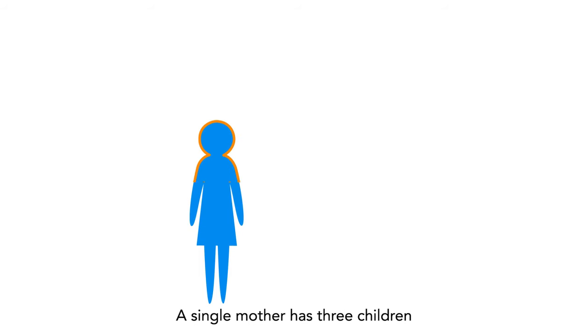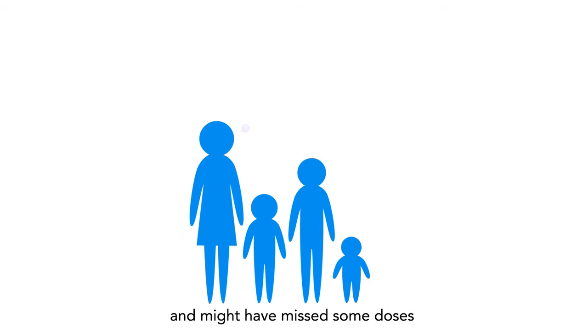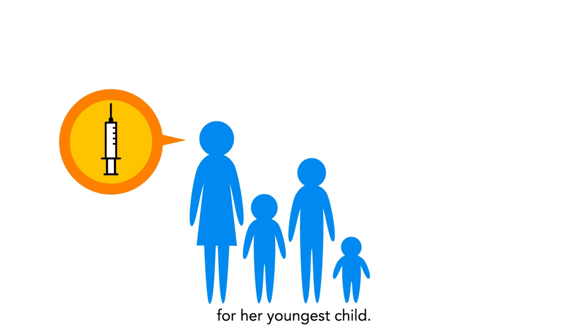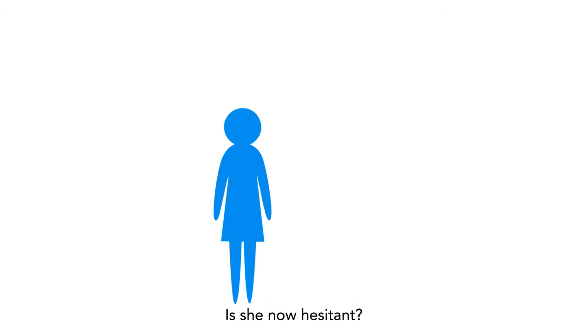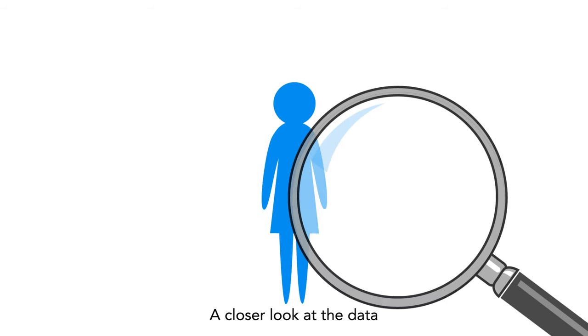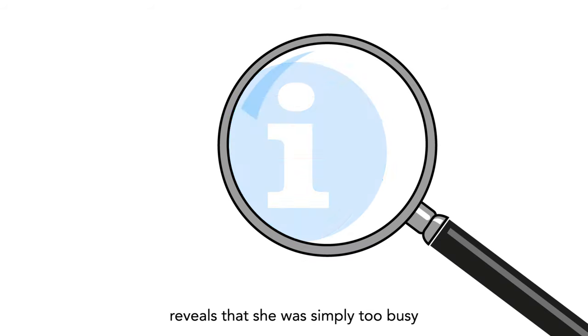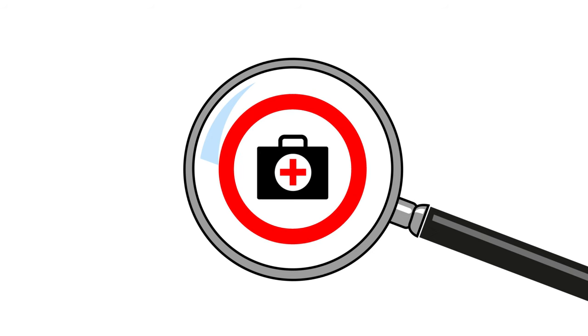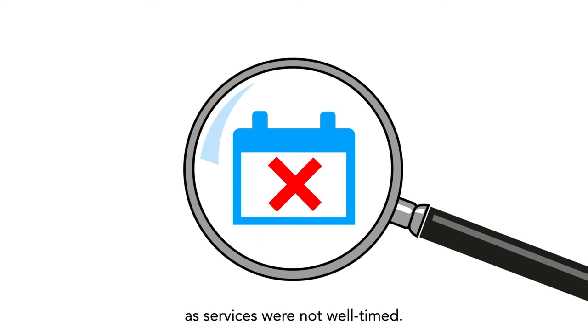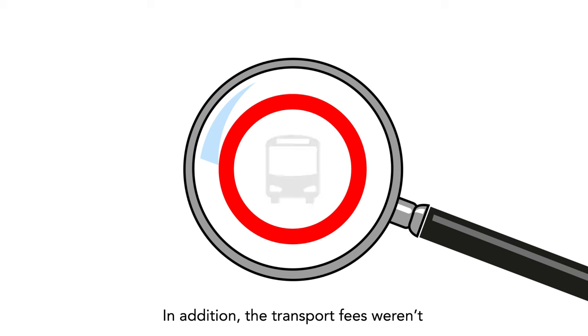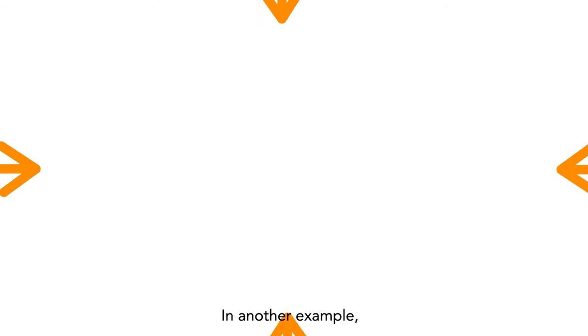For example, a single mother has three children and might have missed some doses for her youngest child. Is she now hesitant? A closer look at the data reveals that she was simply too busy to arrange childcare as services were not well-timed. In addition, transport fees weren't easy to cover.